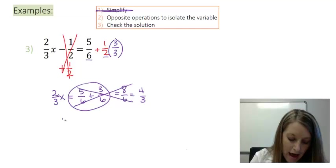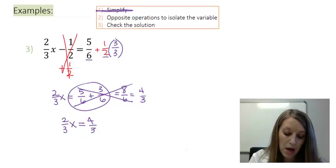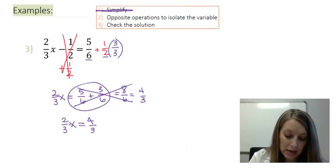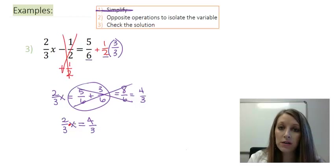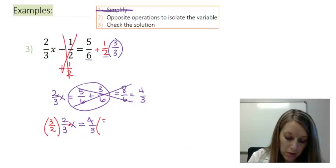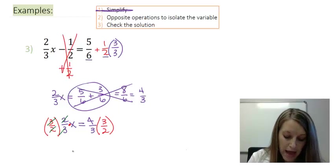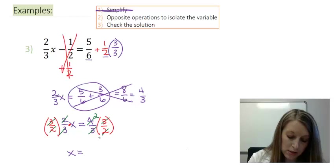At this point, I have 2 thirds x is equal to 4 thirds. To get rid of my 2 thirds x, I can divide by 2 thirds. Or to divide fractions, we know that we multiply by the reciprocal. So the easiest way to do this is to multiply by the reciprocal, 3 halves, on both sides. On the left, my 3 over 3 cancels, my 2 over 2 cancels, isolating my x variable. And on the right, my 3 over 3 cancels, and my 4 over 2 reduces to 2. So that means I have my final answer of 2.